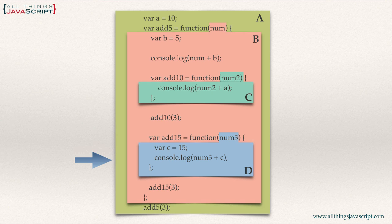Now, what if we change a line of code? Instead of referring to variable A, we refer to variable C. Is that possible? Variable C is declared within scope D, and scope D is not part of the scope chain for scope C. Therefore an error would be produced. It would look for C within scope C, can't find it, goes to scope B, can't find it, then goes to scope A, can't find it, and generates an error.